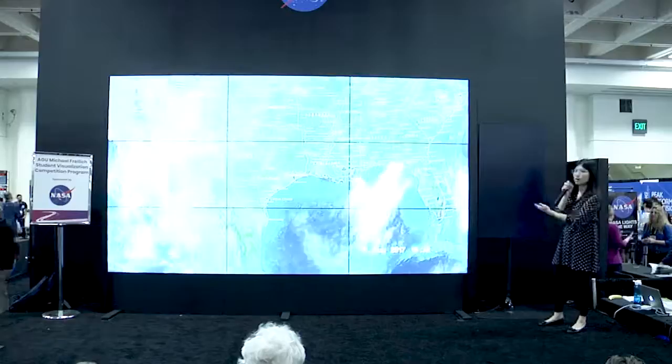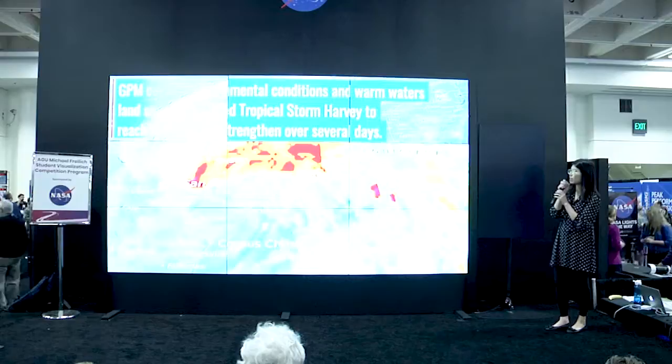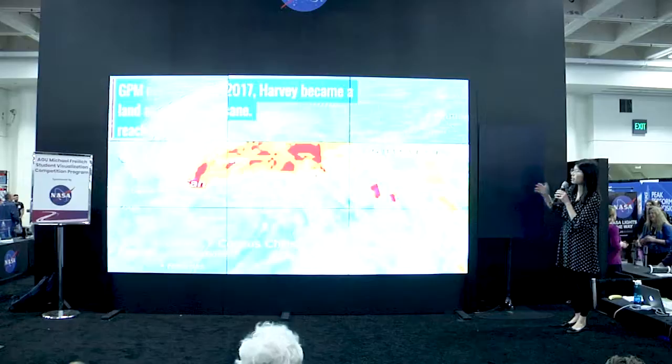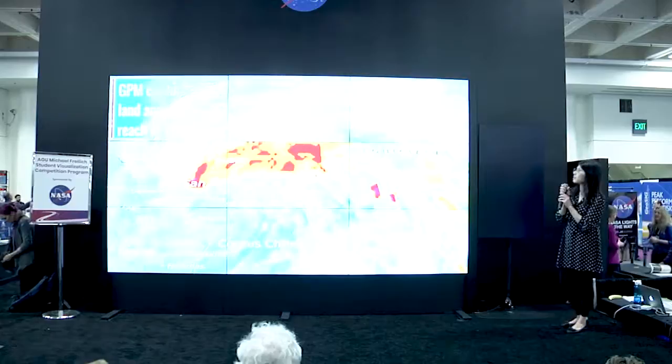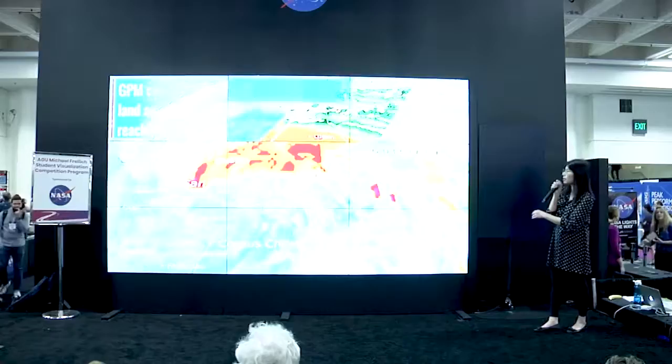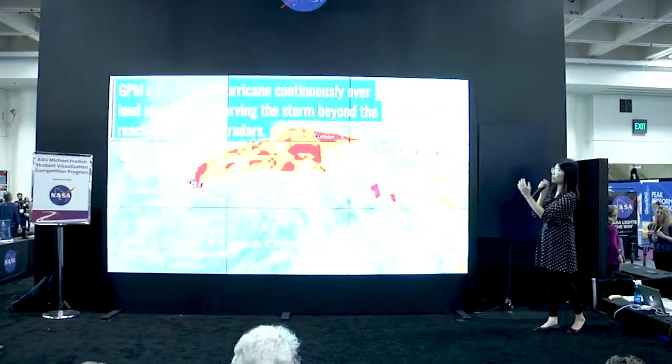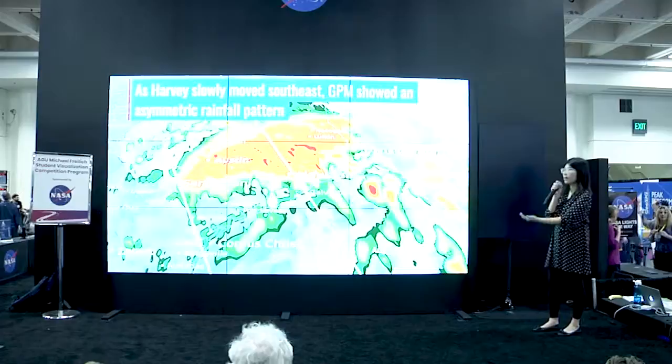I'll give you an overview of the Harvey event. Harvey is a hurricane that occurred in August 2017 and brought tremendous rainfall to the Texas Gulf Coastal region. It made its landfall around August 26th, and the east and north parts of Harvey brought a lot of rainfall into the Texas Gulf region.